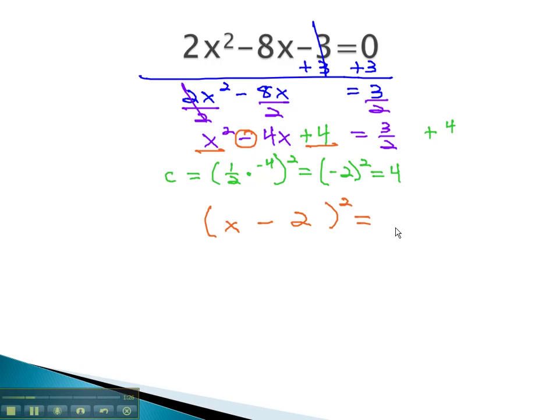x - 2 squared equals... On the right side, we'll need a common denominator, which we can get by multiplying by 2. 3/2 plus 8/2 gives us 11/2.